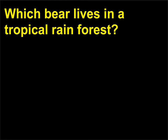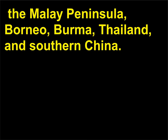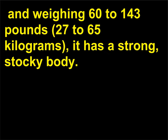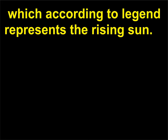Which bear lives in a tropical rain forest? The Malayan sun bear (Ursus malayanus) is one of the rarest animals in the tropical forests of Sumatra, the Malay Peninsula, Borneo, Burma, Thailand, and southern China. The smallest bear species, with a length of 3.3 to 4.6 feet (1 to 1.4 meters) and weighing 60 to 143 pounds (27 to 65 kilograms), it has a strong, stocky body. Against its black short fur it has a characteristic orange-yellow-colored crescent across its chest, which according to legend represents the rising sun.